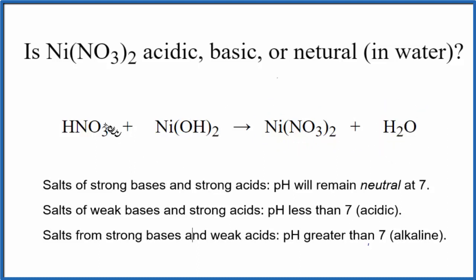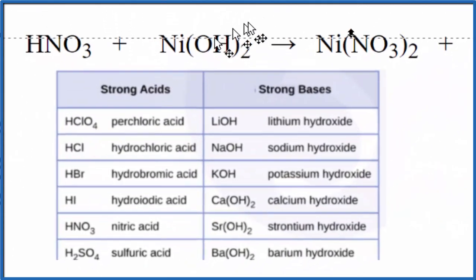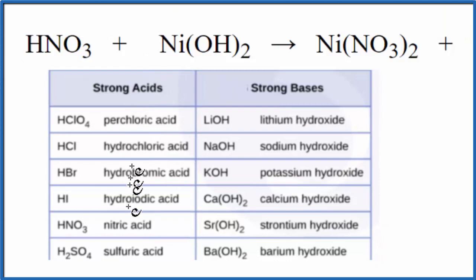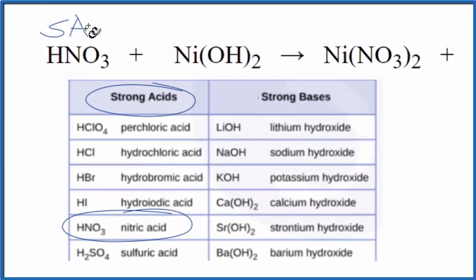Once we have that, we can figure out the strength of the acid and the base and then use these rules. So this is a really good table to memorize. We're looking for nitric acid. So we go down, and here is nitric acid. It's a strong acid, SA for strong acid.